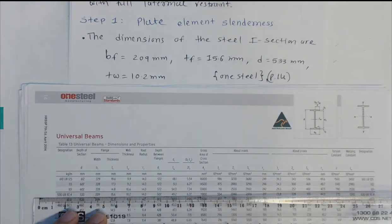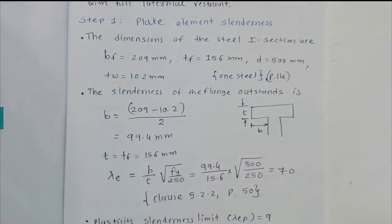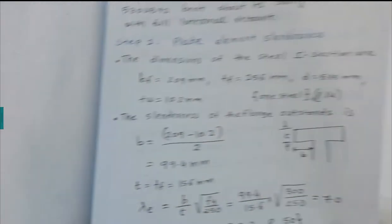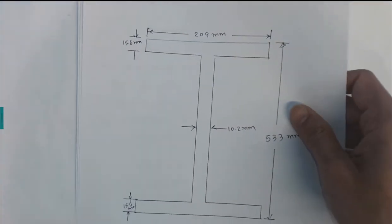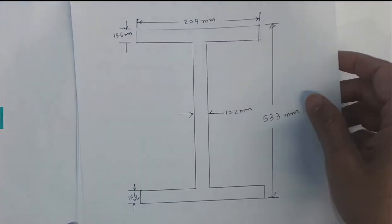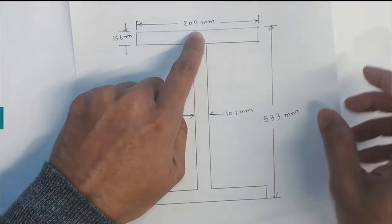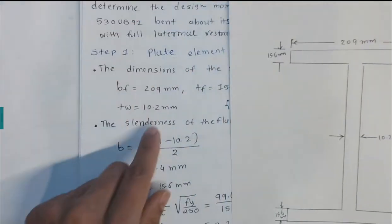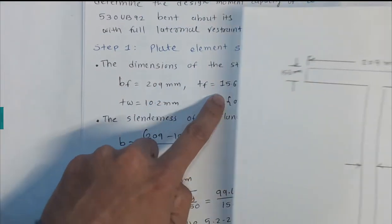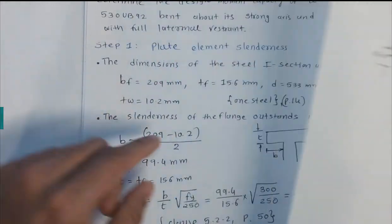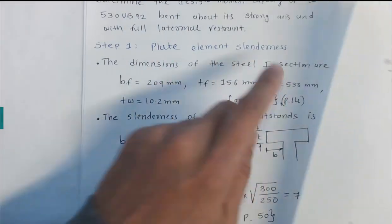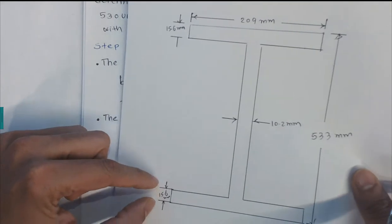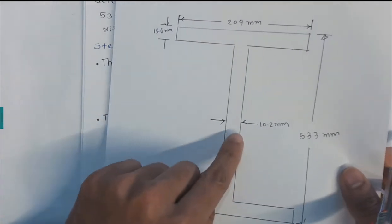We annotate these dimensions on the I-beam diagram: 209 mm is the width of the flange, 15.6 mm is the thickness of the flange, 533 mm is the depth, and TW = 10.2 mm is the web thickness.